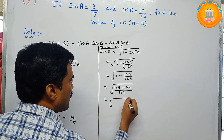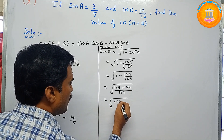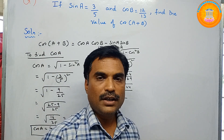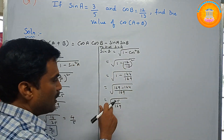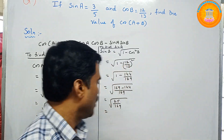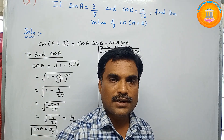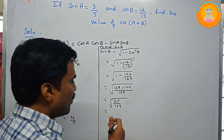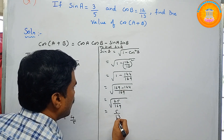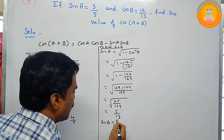What is 169 minus 144? That gives 25. So we have square root of 25 by 169. Apply the square root to numerator and denominator: 25 is 5 squared, so square root of 25 is 5; 169 is 13 squared, so square root of 169 is 13. Therefore sin b equals 5 by 13.